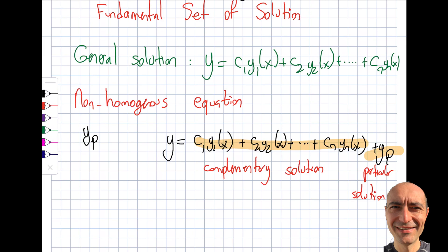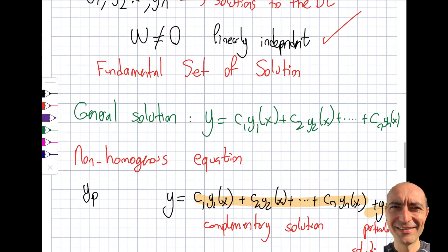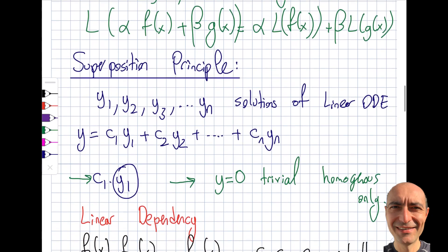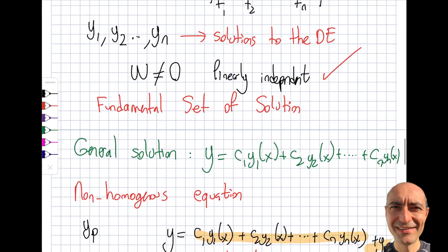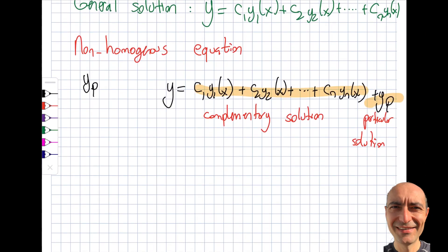So it's clear that the general solution is the sum of the complementary solution — obtained by setting the right-hand side to zero — and the particular solution from the non-homogeneous equation. I'll discuss how to actually solve for these in many future videos. Now I want to introduce superposition for the non-homogeneous case.